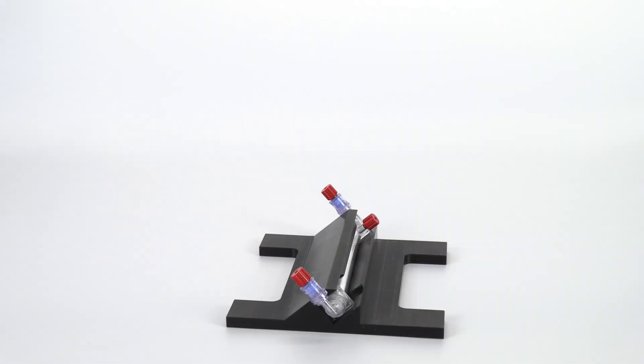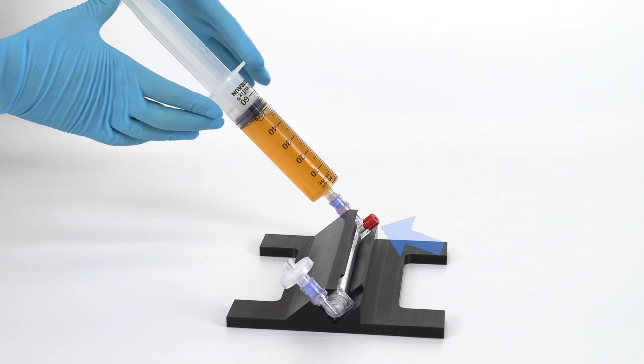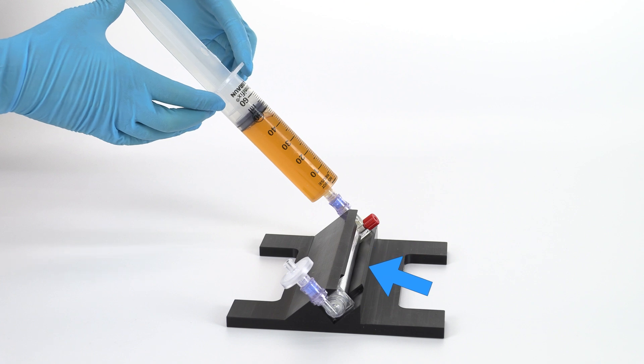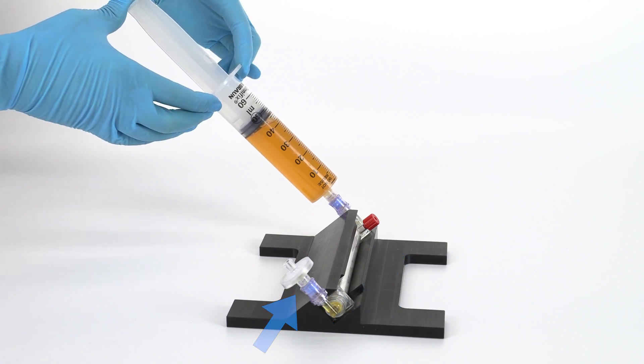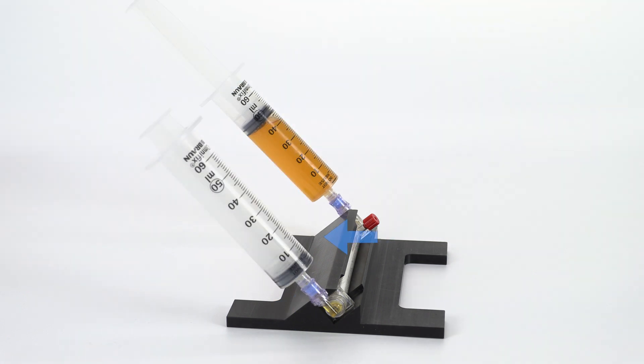To continue, insert the core ultrafiltration device into the base as shown. Attach the air filter to the right port and the platelet-poor plasma syringe to the left. Prime the ultrafiltration device until the plasma solution reaches the air filter. Then replace the air filter with a 60 milliliter syringe.